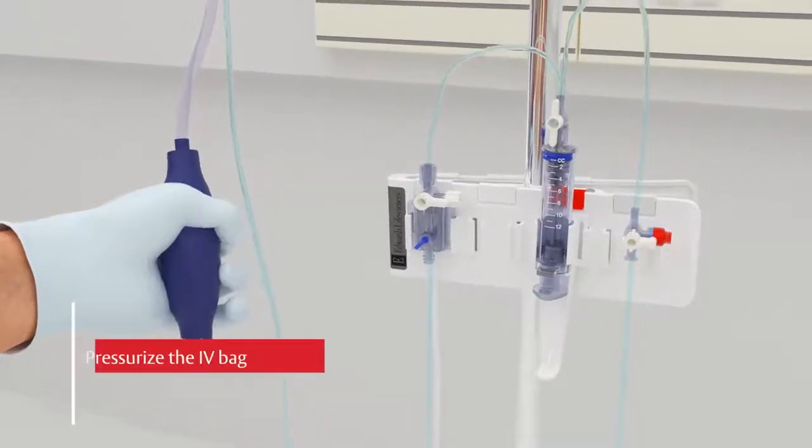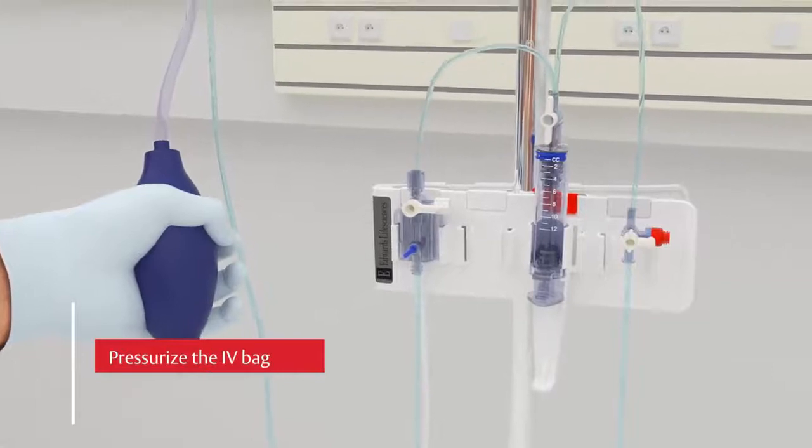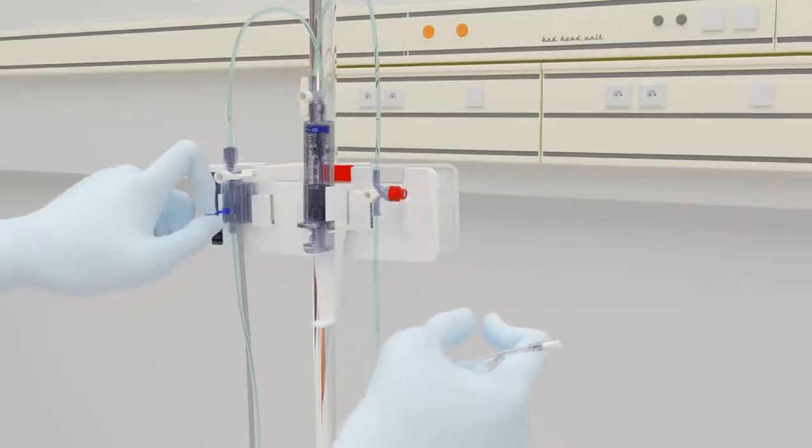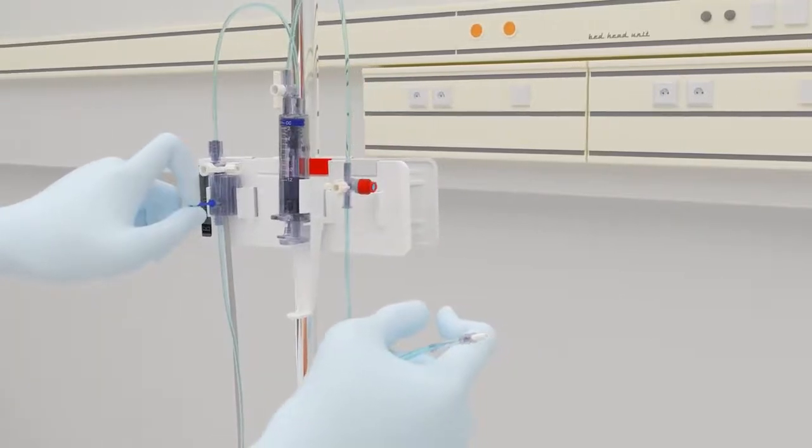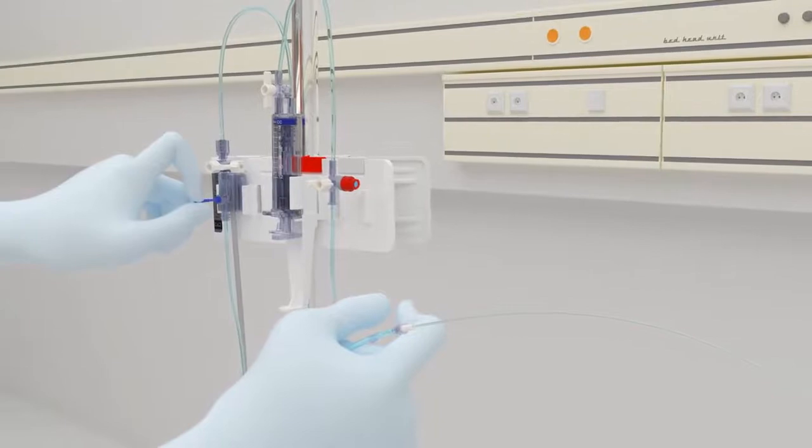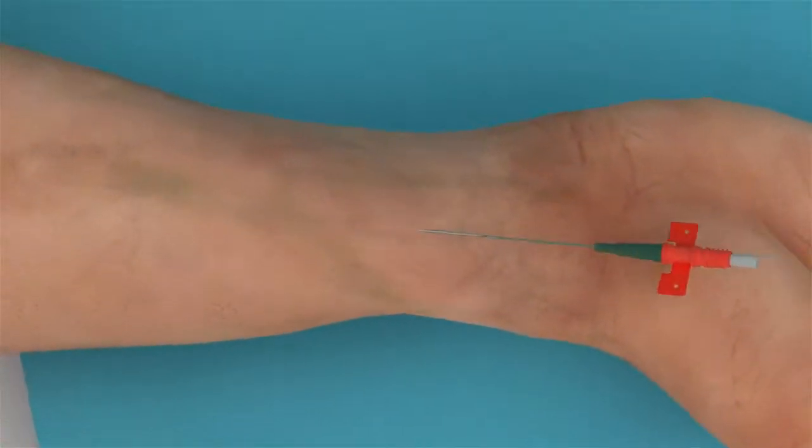Pressurize the IV solution bag per hospital policy. After pressurizing the bag, pull the snap tab to provide flow and ensure all air is removed from the system. Then connect to the patient's catheter.